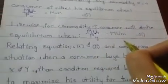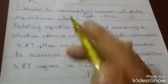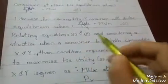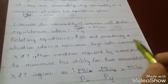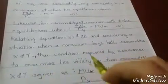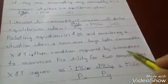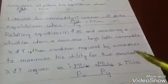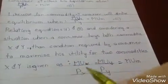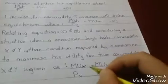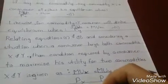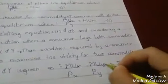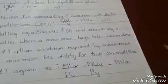Relating equations one and two, and considering a situation when a consumer buys both commodities X and Y, then the condition required by a consumer to maximize his utility for two commodities X and Y is given as: MU X upon price PX is equal to MU Y upon price PY is equal to MU M.